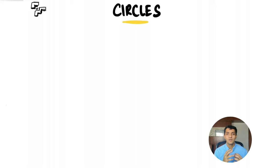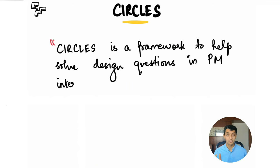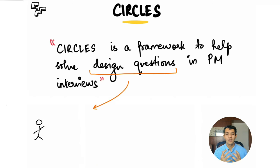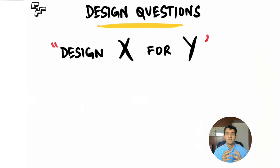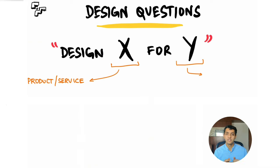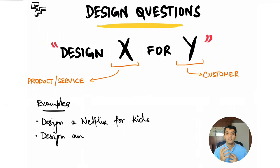To start off with a very basic question — what exactly is CIRCLES? CIRCLES is a framework that helps you solve design questions in product management interviews. Design questions are those which ask you to design a specific product for a specific customer. These questions come in the form of 'design X for Y,' where X is the product or service and Y is the customer. Some examples could be 'design Netflix for kids' or 'design an alarm clock for people who are visually impaired.'